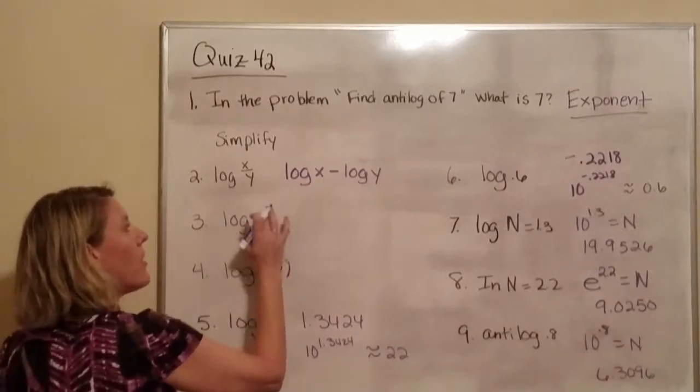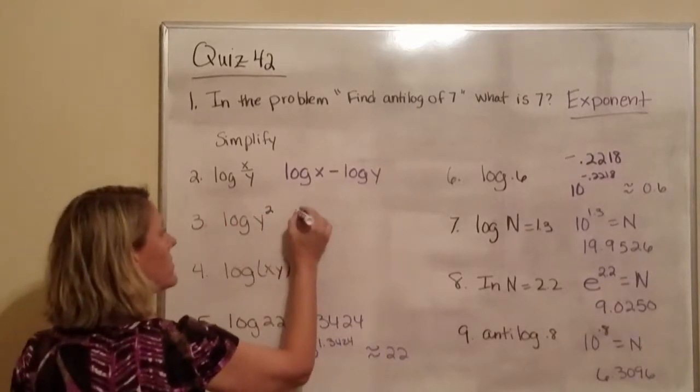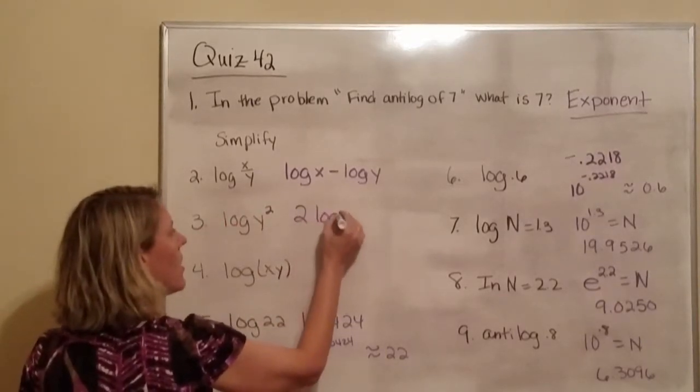Here, whatever our exponent is, we pull out and put in front. So it would be 2 log y.